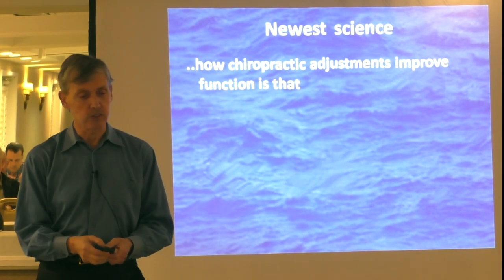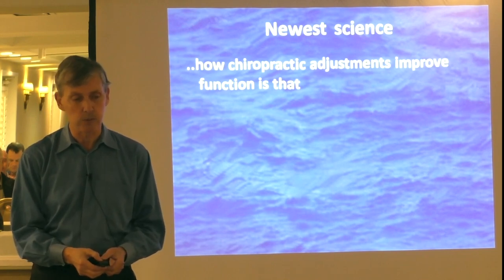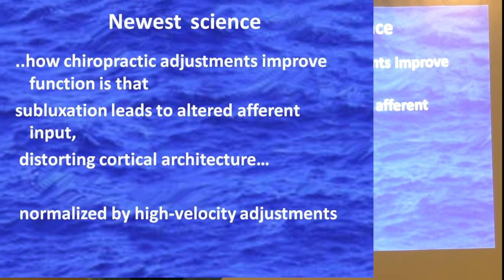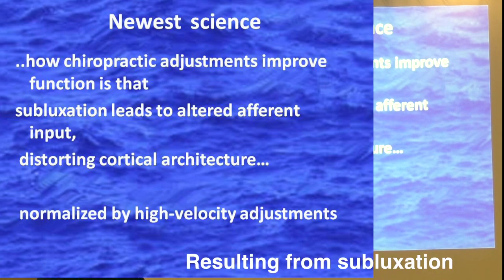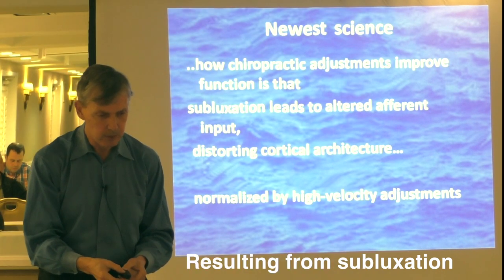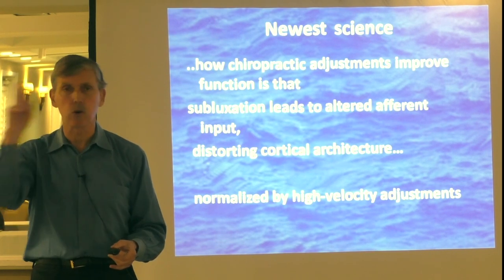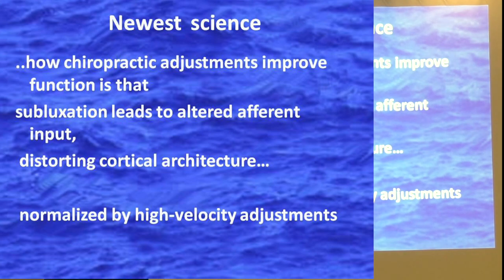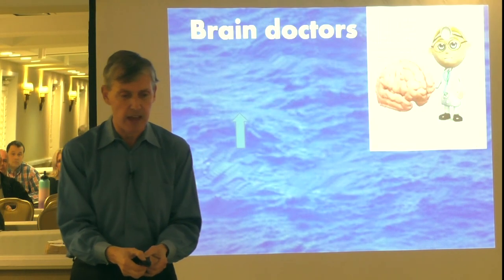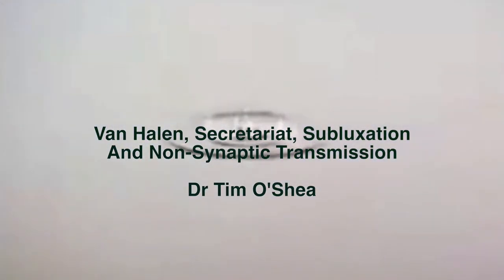The very newest science showing how chiropractic adjustments improve function is that subluxation leads to altered afferent input. The brain is trying to get information not only from your body but from the whole environment. This altered, incorrect information distorts your cortical architecture in the brain. This whole errant pattern can be normalized by high-velocity adjustments. That's not magic or voodoo or theory — this is fact. It's been proven.